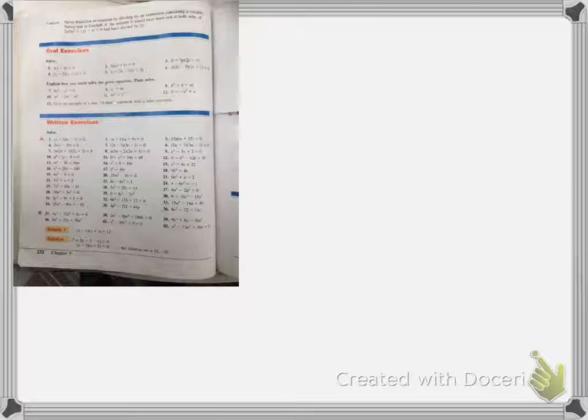When working with the zero product property, it does not matter if the equation is set up as number 1, x times x minus 6 equals 0,